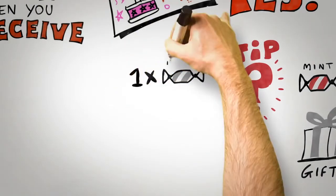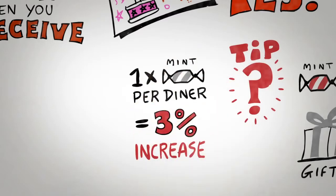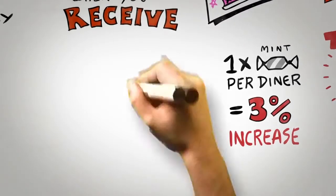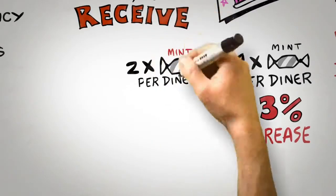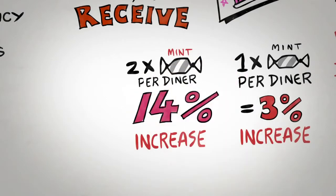In the study, giving diners a single mint at the end of their meal typically increased tips by around 3%. Interestingly, if the gift is doubled and two mints are provided, tips don't double. They quadruple, a 14% increase in tips.